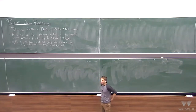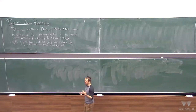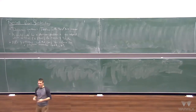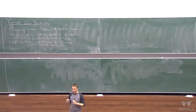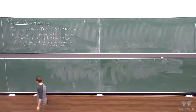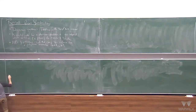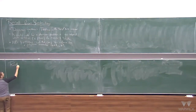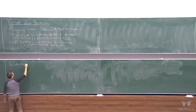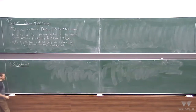At the end of last lecture I gave a rough definition of what an NP-hard problem is. Today I'm going to start with a more formal, proper definition. For this it's useful to talk about a concept in computational complexity called reductions.